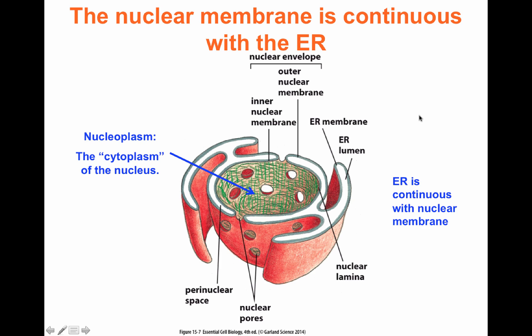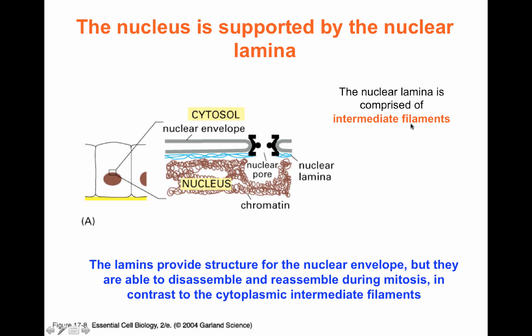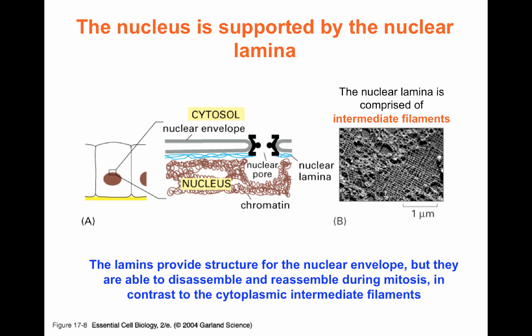The nucleus is supported by an internal array of nuclear lamins, which are intermediate filaments. Those intermediate filaments help provide the structure for the nucleus and are assembled and disassembled when the nucleus is destroyed to allow for mitosis. As you can remember from the previous chapter we covered, you have the mesh of intermediate filaments that composes the nuclear lamina, and that gives the structure to the nucleus.